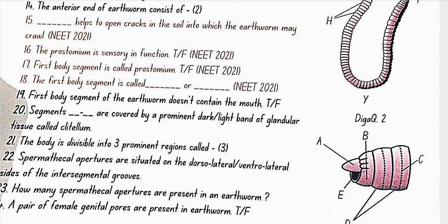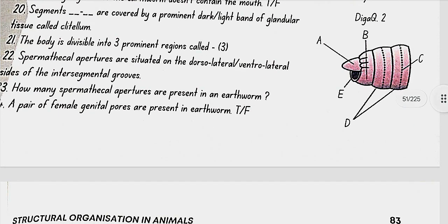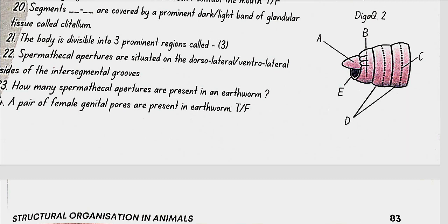The first body segment of earthworm does contain the mouth — the statement that it doesn't is false. Segments 14 to 16 are covered by a prominent dark band of glandular tissue called the clitellum. The body is divisible into three prominent regions called preclitellar, clitellar and postclitellar segments. Spermathecal apertures are situated on the ventrolateral sides of the intersegmental grooves.